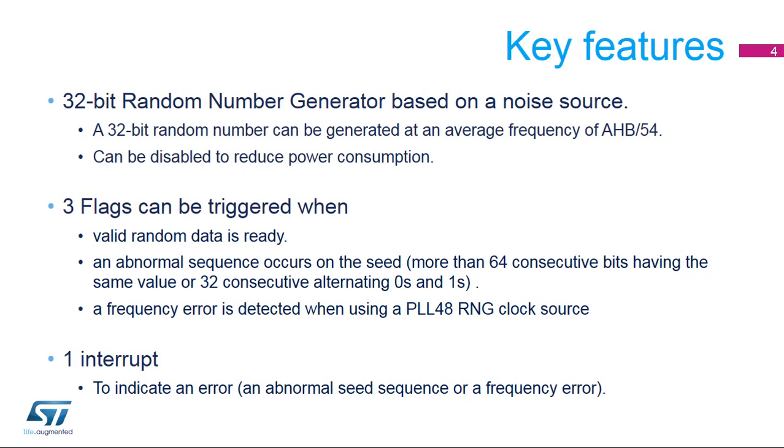The RNG peripheral is based on continuous analog noise that provides a random 32-bit value, which will be explained in detail later on.